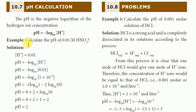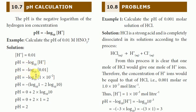For example, we will calculate the pH of 0.01 molar nitric acid, HNO3. The H+ ion concentration is 0.01. So pH equals minus log10 of 0.01.